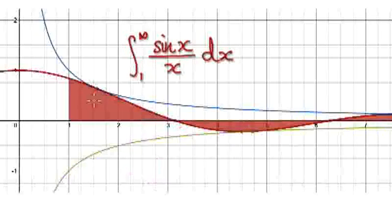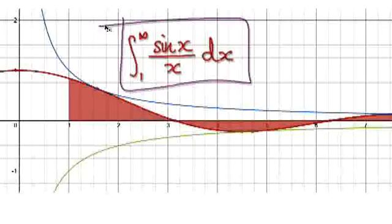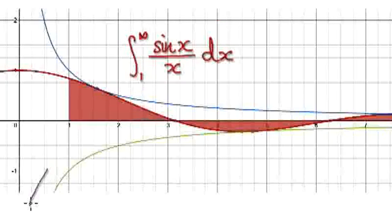And then this line here is your sine x over x graph. You've got a positive area here, a negative area, positive area. Will this integral converge or will it diverge? Press pause and have a go.